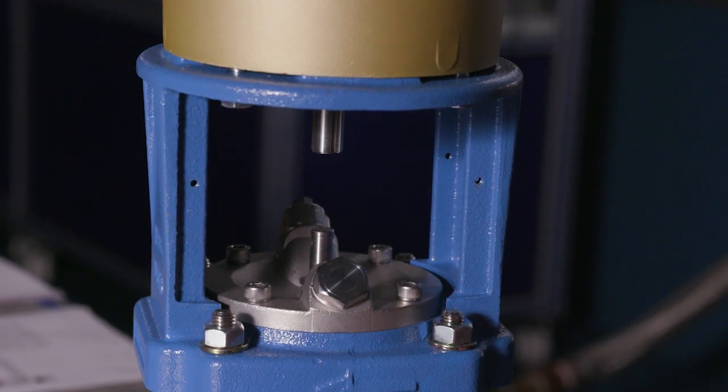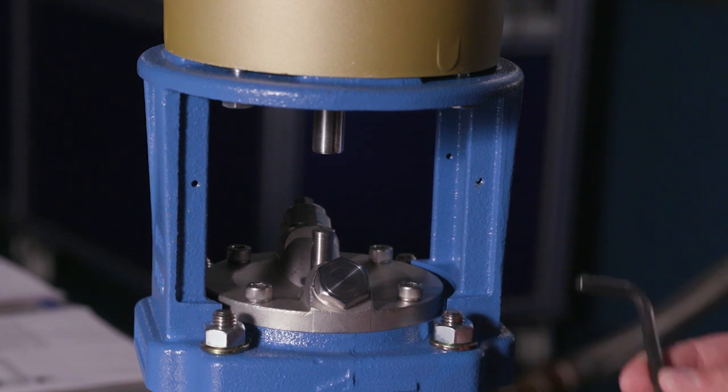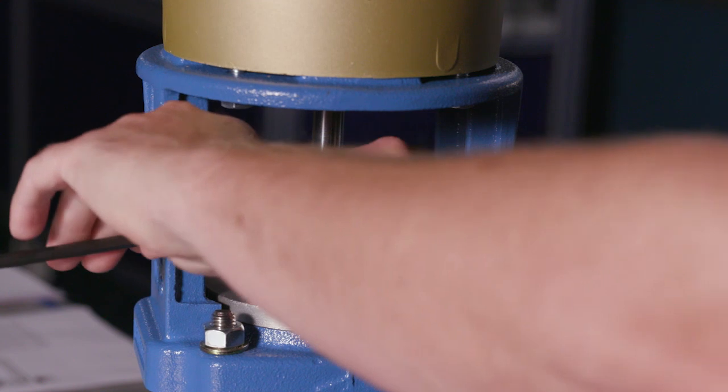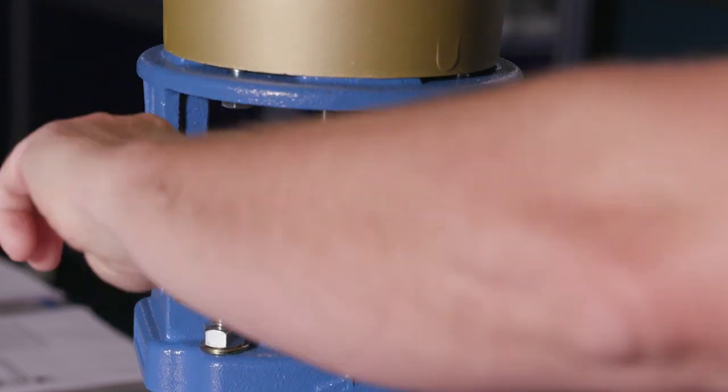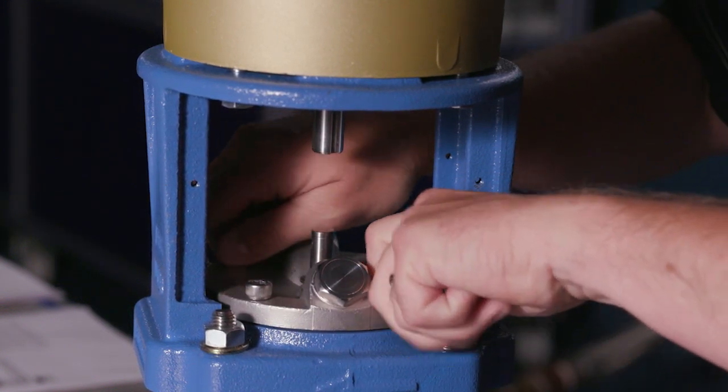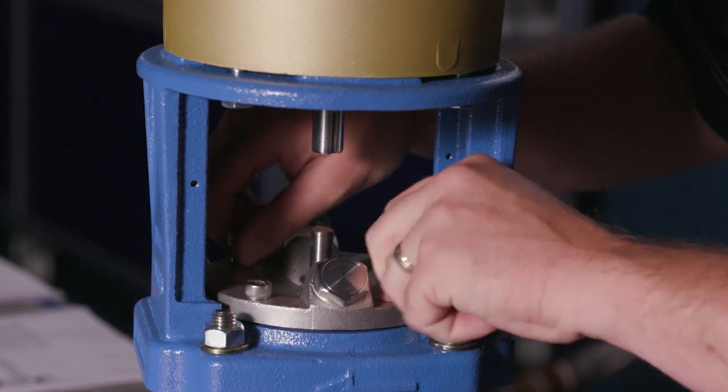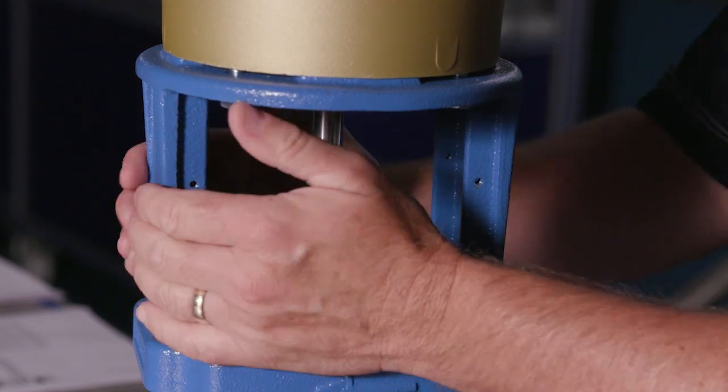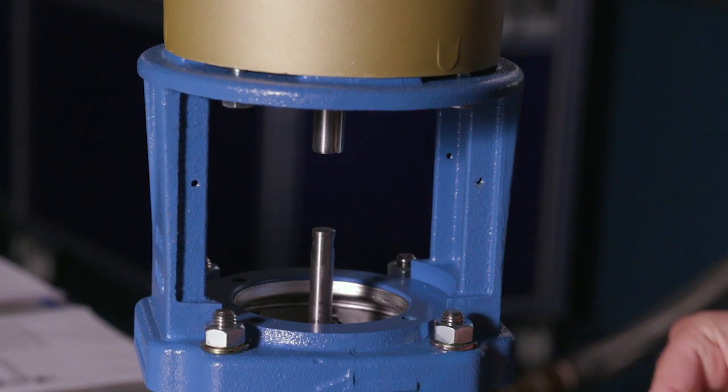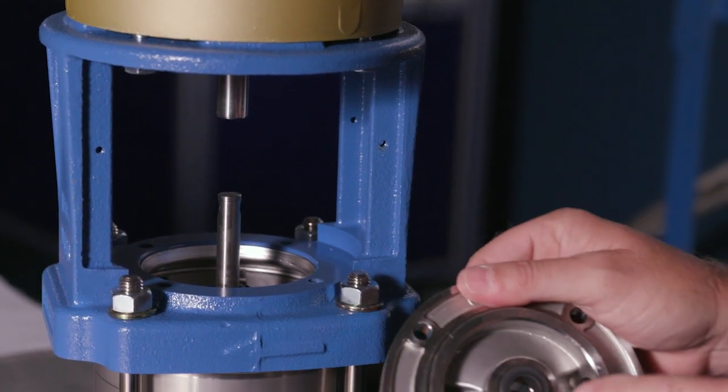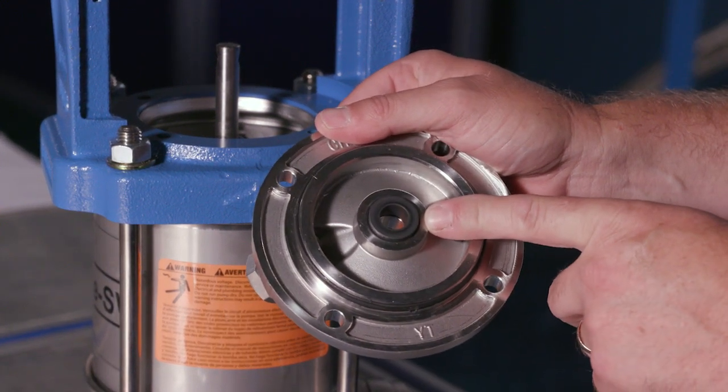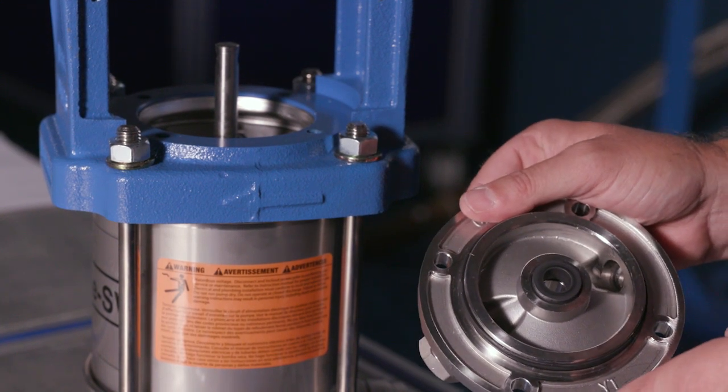Next, we're going to remove this seal gland or seal plate. Again, you need a six millimeter, so we're going to go with the Allen here. We'll notice here we have a portion of the seal, and this is the stationary portion of your mechanical seal, and inside we have the rotary section attached to the shaft.